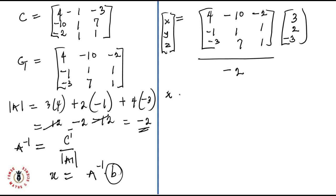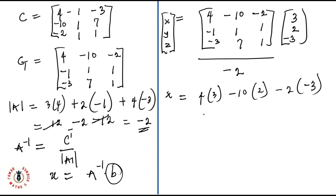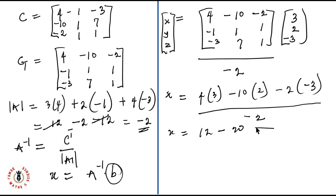To find x, I pick the first row of the adjoint and multiply by vector B: four times three is twelve, minus ten times two is minus twenty, and minus two times minus three is plus six, all over minus two. That's twelve minus twenty plus six equals minus two, over minus two, which equals one. So x equals one.